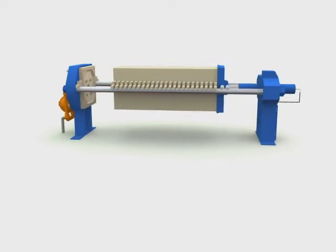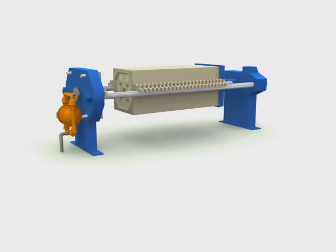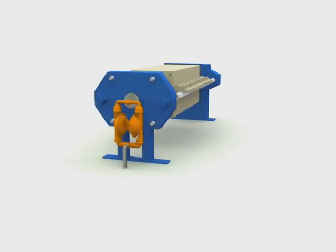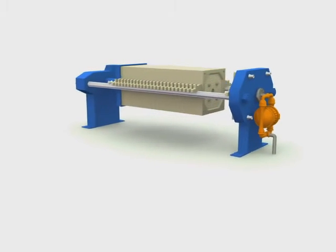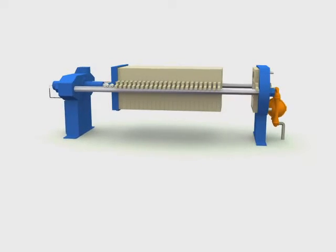A filter press is an economic and efficient liquid-solid separation device. At one end of the machine is the feed head containing piping for the slurry delivery. At the other end is the crosshead containing a clamping mechanism.